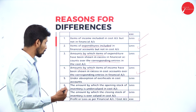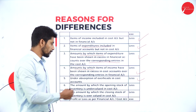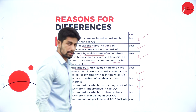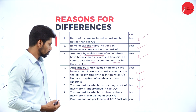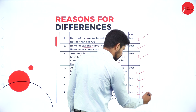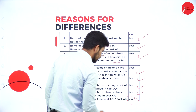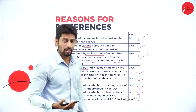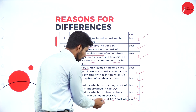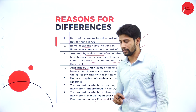If items of income are shown in excess in cost accounts over the corresponding entries in financial accounts, deduct it from the costing profit. Under-absorption of overheads in cost accounts — if overheads are under-absorbed, deduct it from the costing profit. If the opening stock of inventory is undervalued in costing, deduct the undervalued amount. If the closing stock of inventory is undervalued in costing, deduct it from the costing profit. After adding and deducting these items, the resulting balance will be the profit or loss as per the financial account.